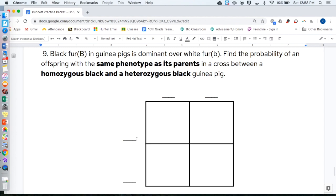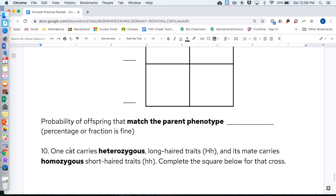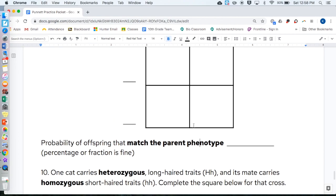Number nine. Black fur, capital B, in guinea pigs is dominant over white fur, lowercase b. Find the probability of an offspring with the same phenotype as its parents in a cross between a homozygous black and a heterozygous black guinea pig. Probability of the offspring that match the parent's phenotype. Go figure out what phenotype means. Write it on the line.